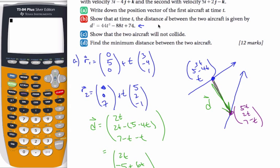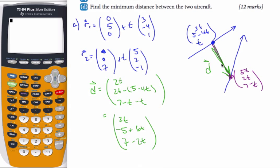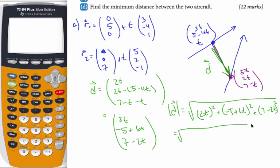And it says, I want to show that the distance between them is given by D squared as such. Well, if I want to find the distance between them, that's the distance vector. I want to find the magnitude of the distance. That's the distance, which I know is going to be the square root of 2T squared plus (-5 + 6T) squared plus (7 - 2T) squared. If I expand this out, I get 4T² + 25 - 60T + 36T² plus 49 - 28T + 4T².